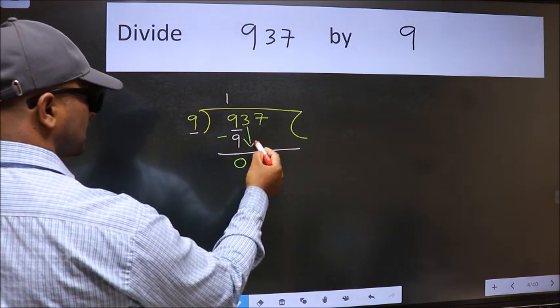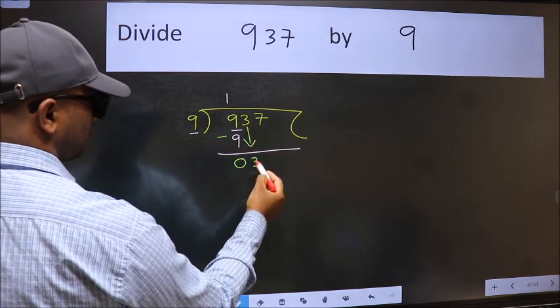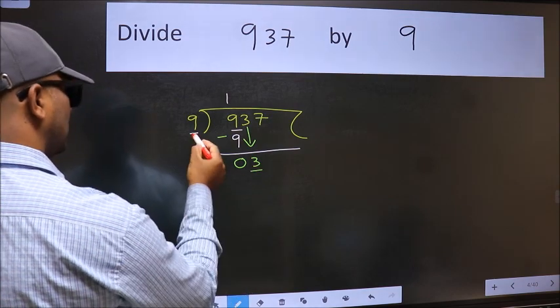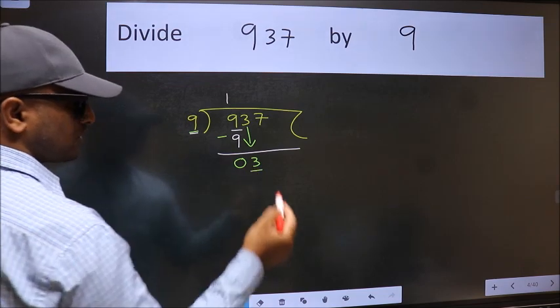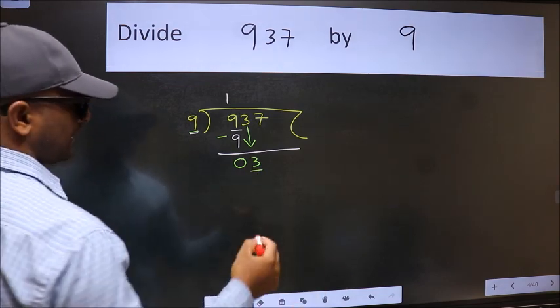After this, bring down the beside number. So 3 down. Now here we have 3 and here 9. 3 is smaller than 9, so we should bring down the second number.